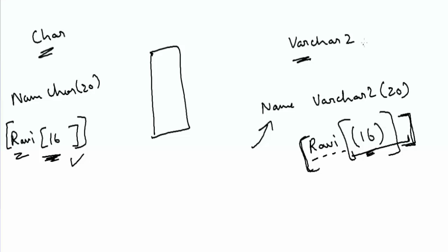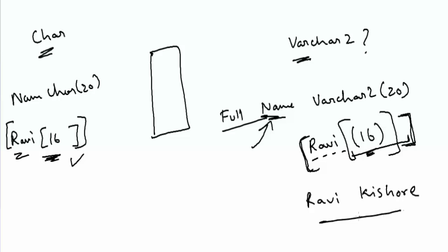There is a consideration with VARCHAR2. If in the future the name column is changed to full name — for example updated to 'Ravi Kishore' (12 characters) — you now need more space than the original 4 characters. This increment needs to be accommodated in the same data block. This is why every data block is never filled 100% — it is filled only up to 80%, and 20% of the space is reserved for future updates. If you update a field, you need to accommodate the expanded data in the same block.